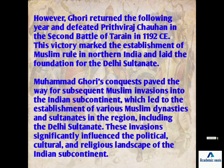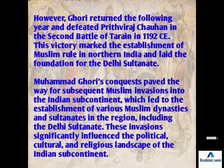Then the Second Battle of Tarain happened in 1192 CE between Muhammad Ghori and Prithviraj Chauhan. This time, Muhammad Ghori won because he allied with Jaichand. As shown in the Prithviraj Chauhan movie, Prithviraj was captured and blinded. Muhammad Ghori established the first Muslim kingdom at Ajmer and caused significant disruption to the Rajput rulers. The Battle of Chandawar in 1194 CE was between Muhammad Ghori and the Gahadavala ruler Jaichand — the same Jaichand who had allied with Ghori earlier — and Muhammad Ghori won again, defeating him badly.